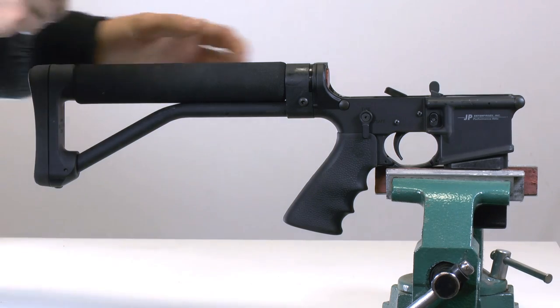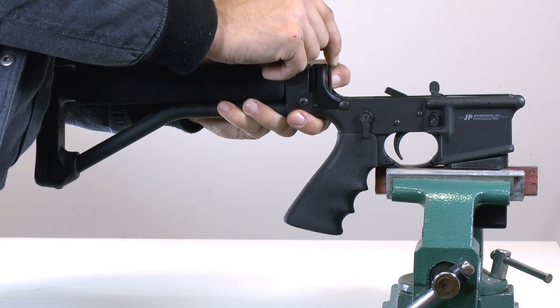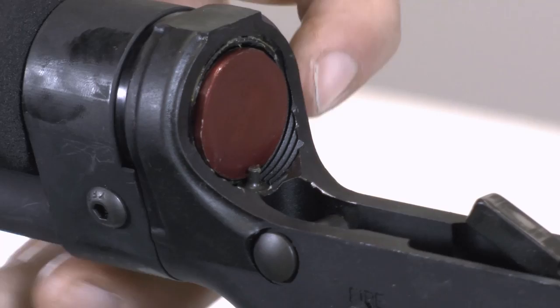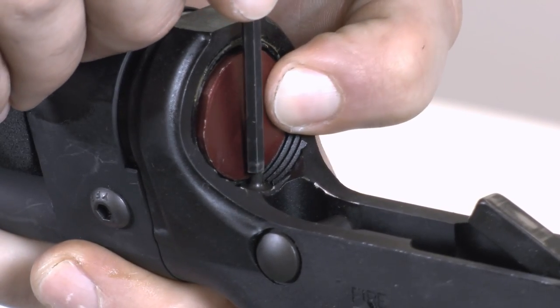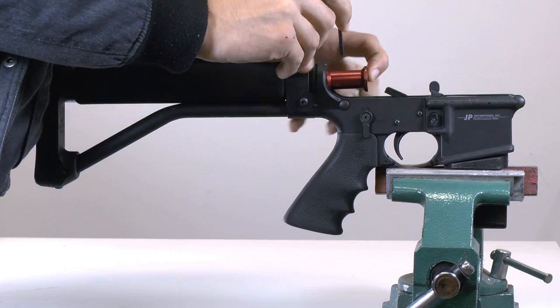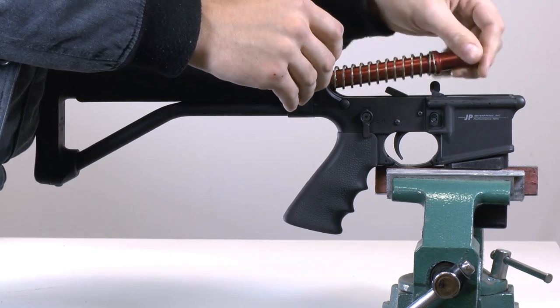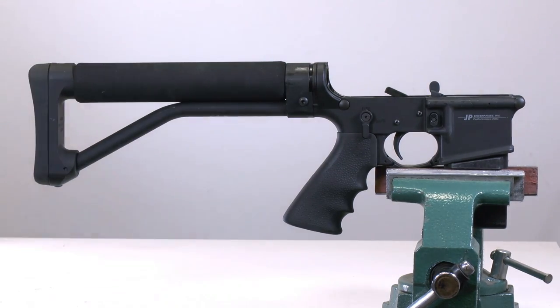With your upper and lower separated, start by removing the existing buffer and spring. Hold the buffer back and compress the buffer retainer plunger with a small punch or hex key. Release the buffer slowly and remove it along with the buffer spring.